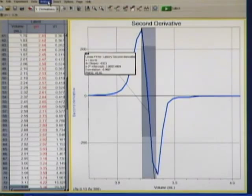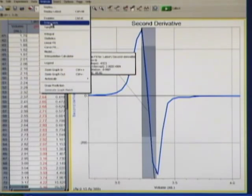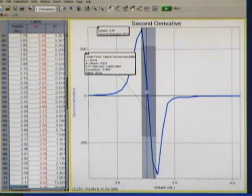I then go to Analyze and Interpolate, which will interpolate along that curve fit line. And if I carefully move that around until my derivative is as close to zero as I can get it, right there, my volume is 3.27. That is the best number we can get for the equivalence point of that titration.